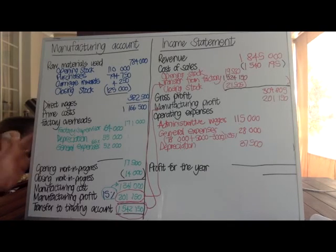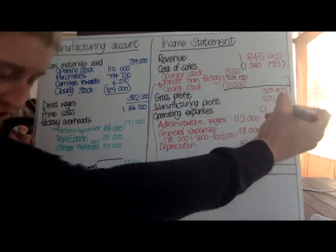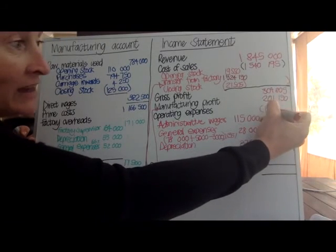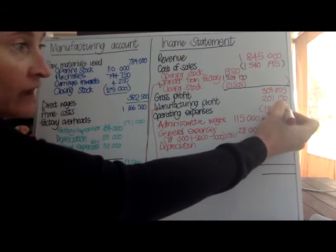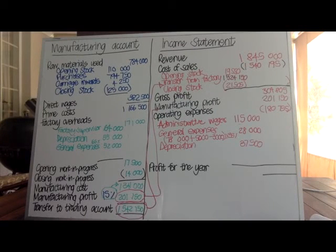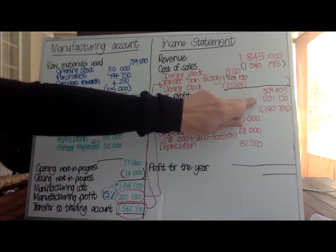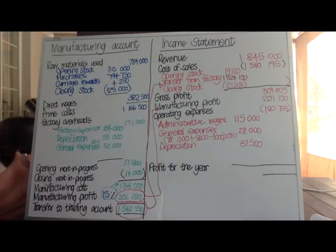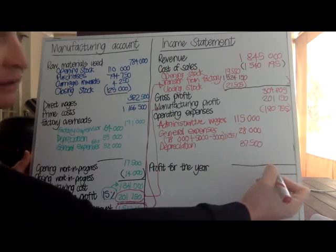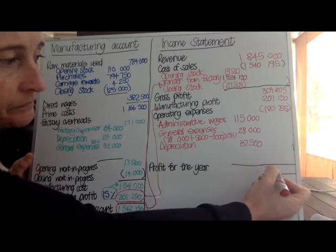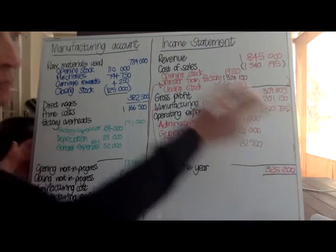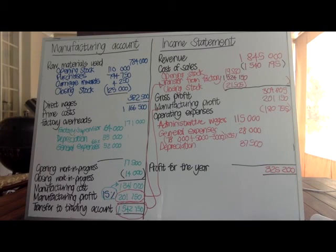All of your operating expenses you can then add up, and you will find that you have $180,755 as your total. I'm showing negatives in brackets to indicate subtraction. I'm then able to work out: gross profit plus manufacturing profit minus expenses gives $325,200 as my profit for the year. Hopefully that clears it up. We'll continue with C, D, and E in another session.